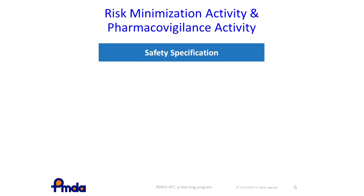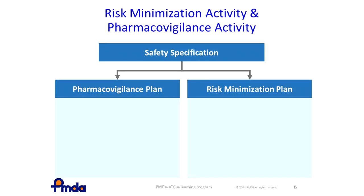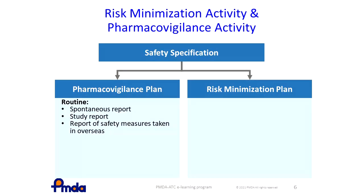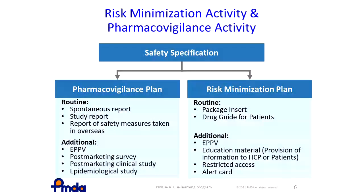On the basis of the safety specification, Marketing Authorization Holders or PMDA assess what pharmacovigilance and risk-minimization activities are needed for each safety concern. In Japan, all drugs need to collect ADR information as pharmacovigilance activity and have a package insert as risk-minimization activity. It needs to be considered on a case-by-case basis whether additional pharmacovigilance and risk-minimization activities should be conducted. For instance, the need for additional risk-minimization activity depends on the severity of the risk, the healthcare setting, the indication, the pharmaceutical form, and the target population.